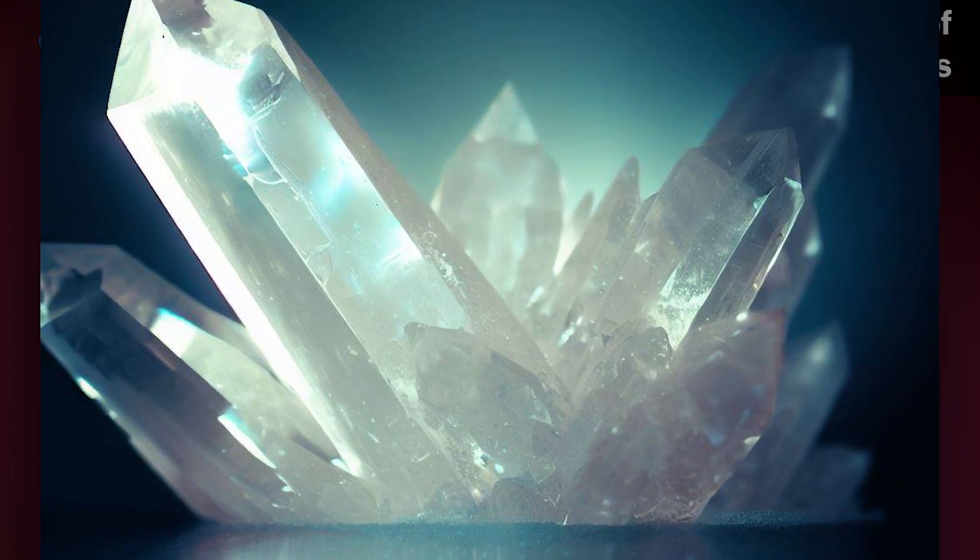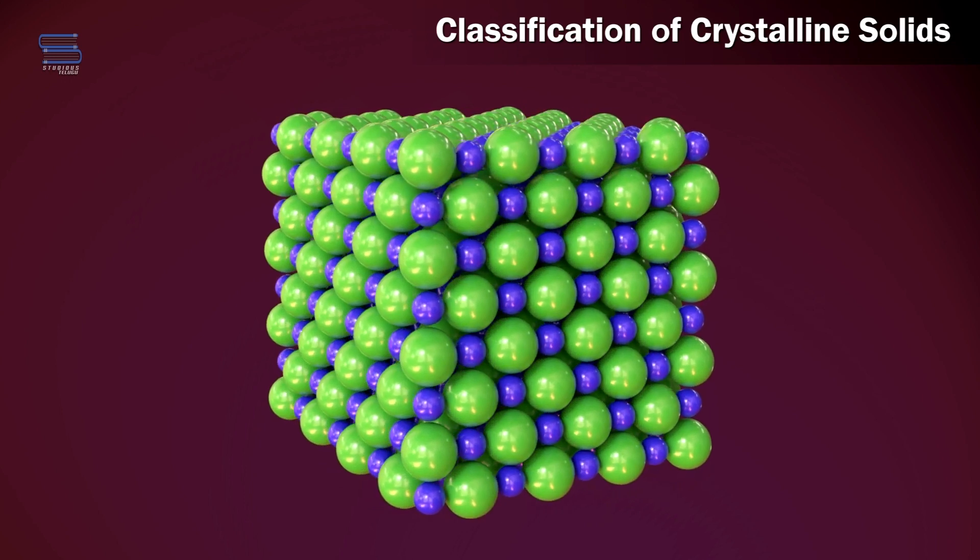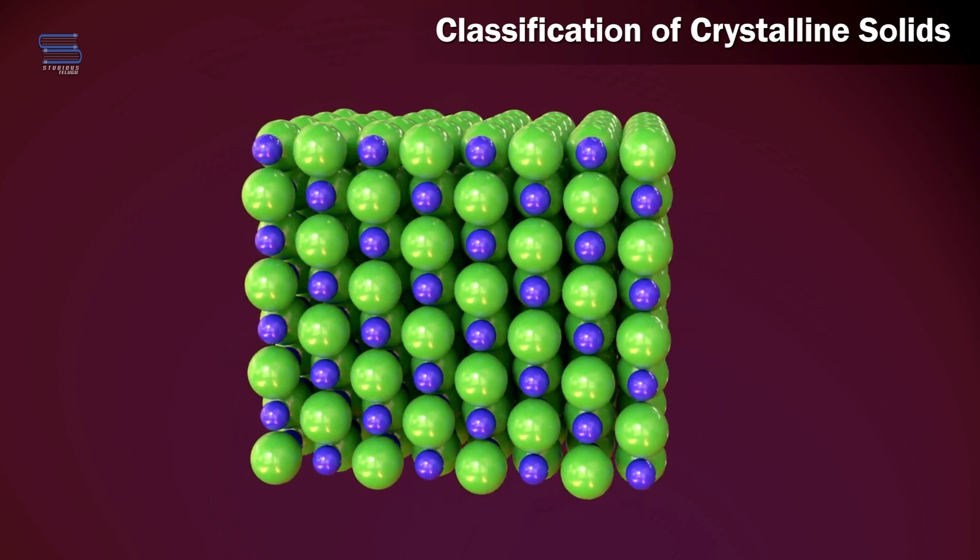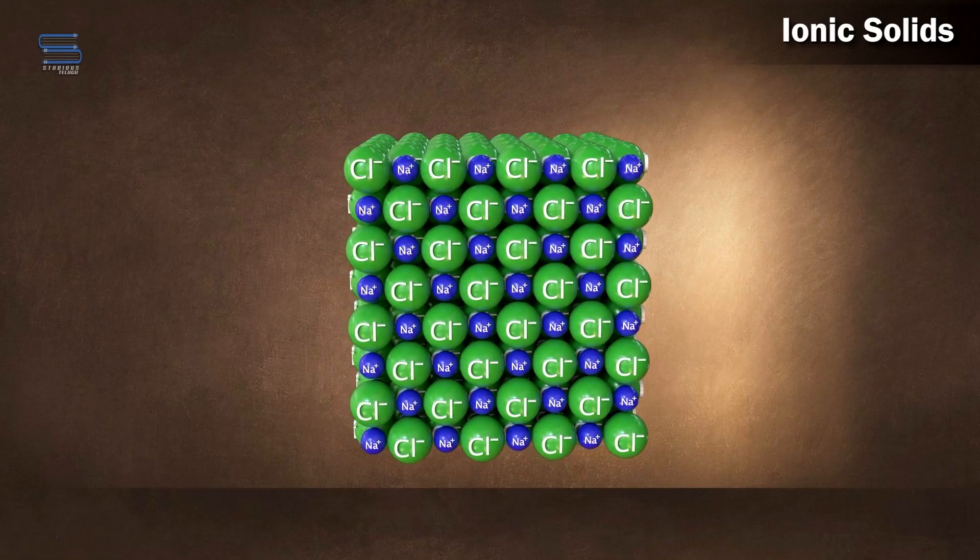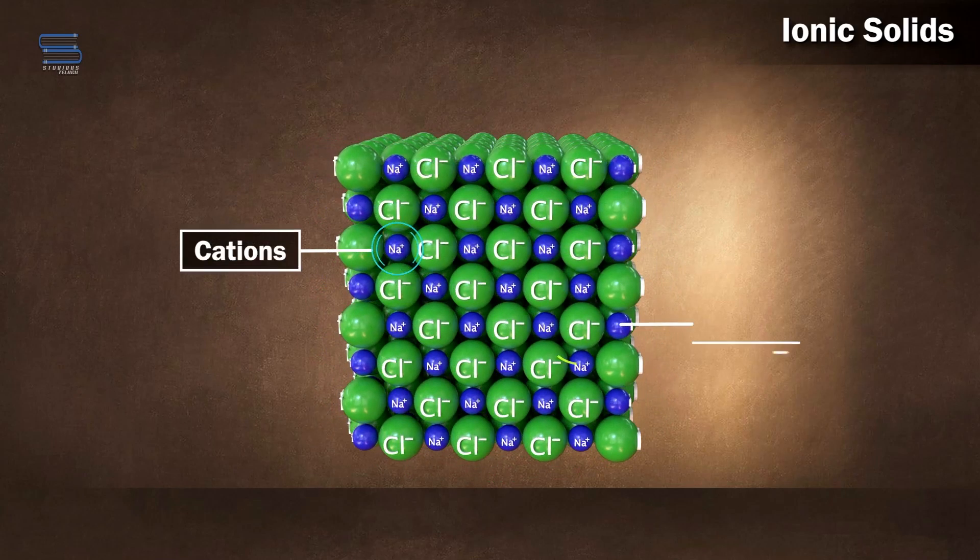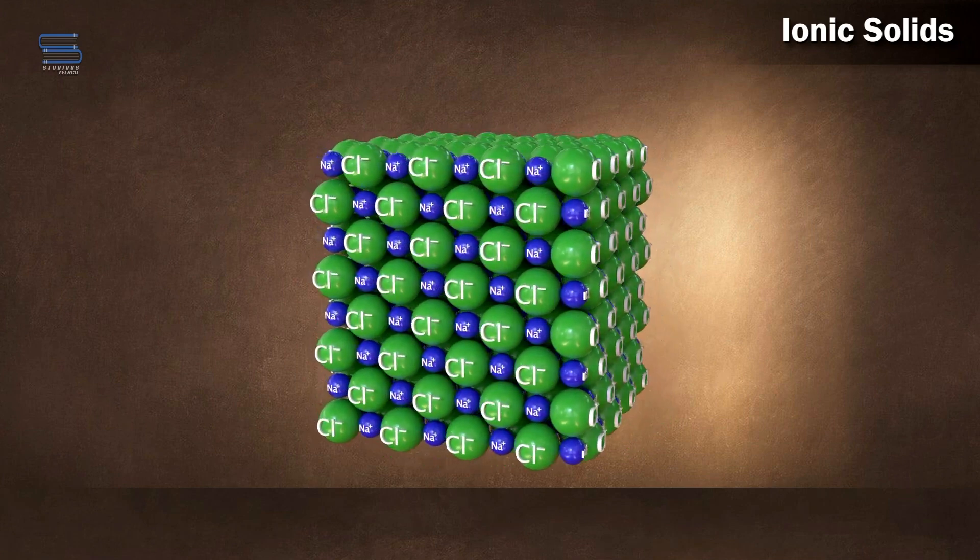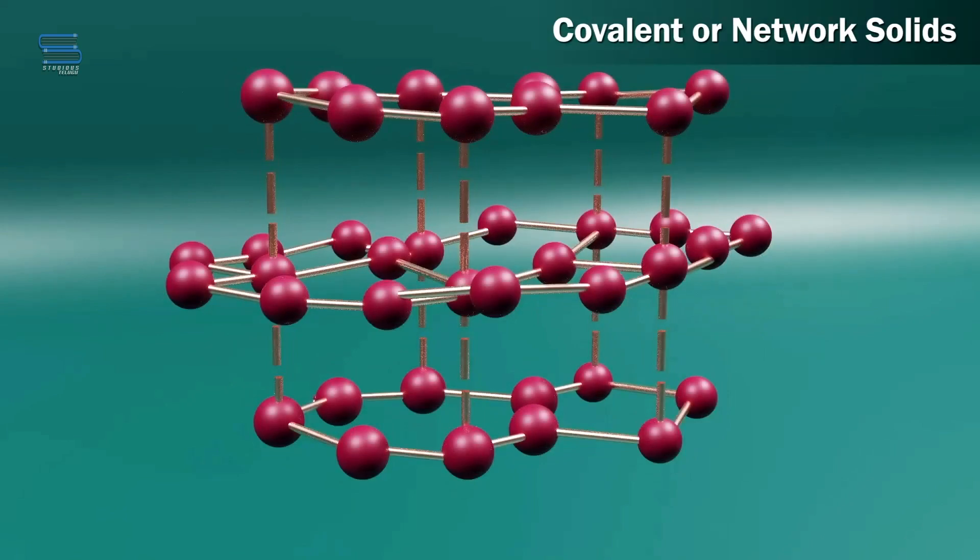Solids come in various types, each with its own characteristics. Ionic solids are composed of positively and negatively charged ions held together by electrostatic forces.